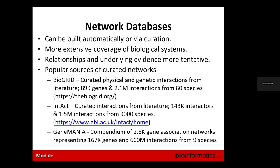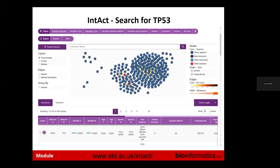BioGRID has 89,000 genes and over 2 million interactions across 80 species. IntAct has 143,000 interactors and 1.5 million interactions. GeneMANIA — one of Gary Bader's projects — is a compendium of 2,800 networks representing 167,000 genes and 660 million interactions. As an example, in IntAct you can type in TP53 and it pulls out everything TP53 interacts with, either genetically or physically, from a series of high-throughput experiments.